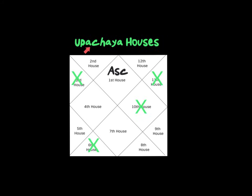Challenges are motivating — they are stepping stones for many people. Then we have the Upachaya Houses — four houses: the 3rd, 6th, 10th, and 11th. Upachaya means growth, getting better over time. In these four houses, no matter what afflictions or difficult planets are there, you get better dealing with the situation over time. You can even get growth and good outcomes out of very challenging circumstances.